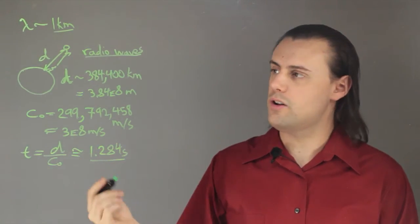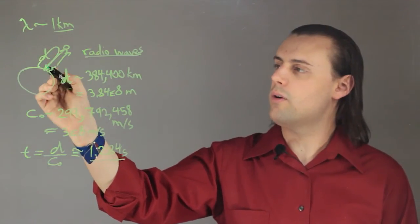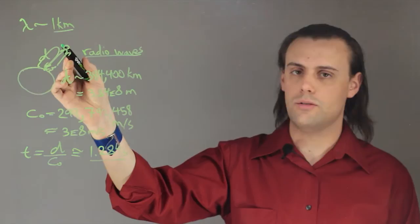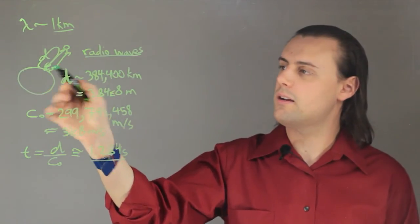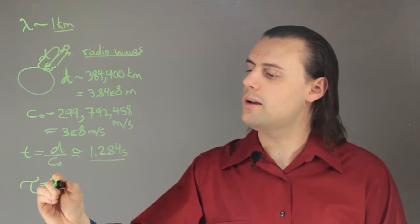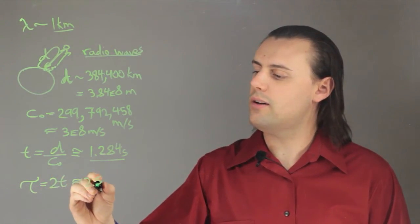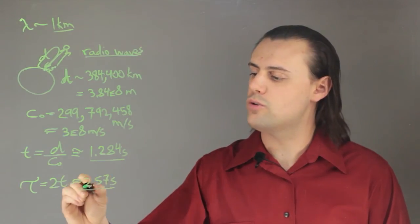Therefore, if we wanted to know the amount of time for a round trip, where we send a radio signal to the Moon, it bounces back and comes back to Earth, we would simply multiply that time by 2, in which we would get 2.57 seconds for the round trip time.